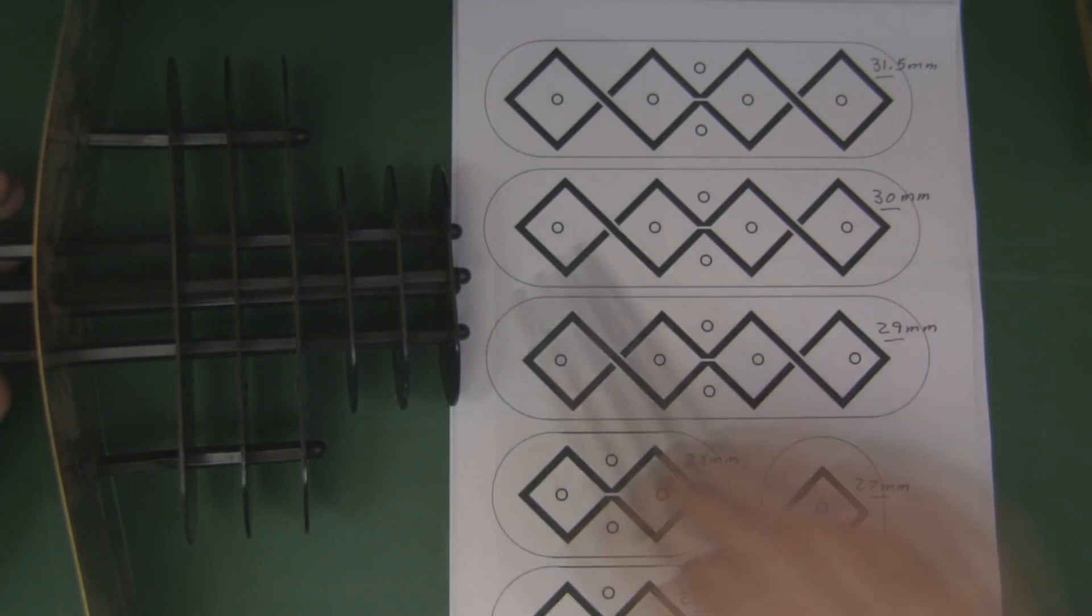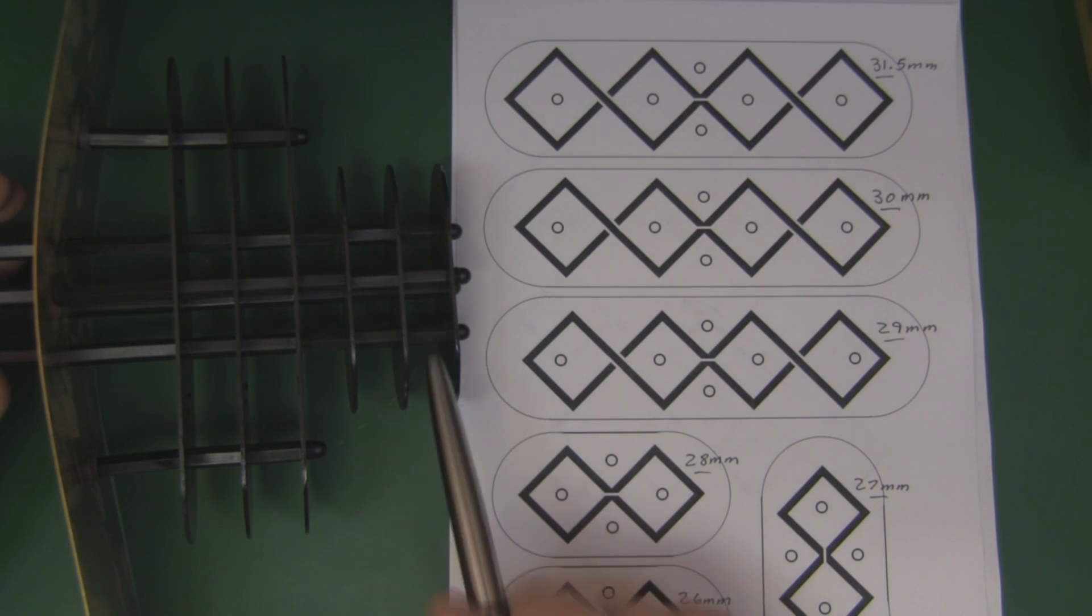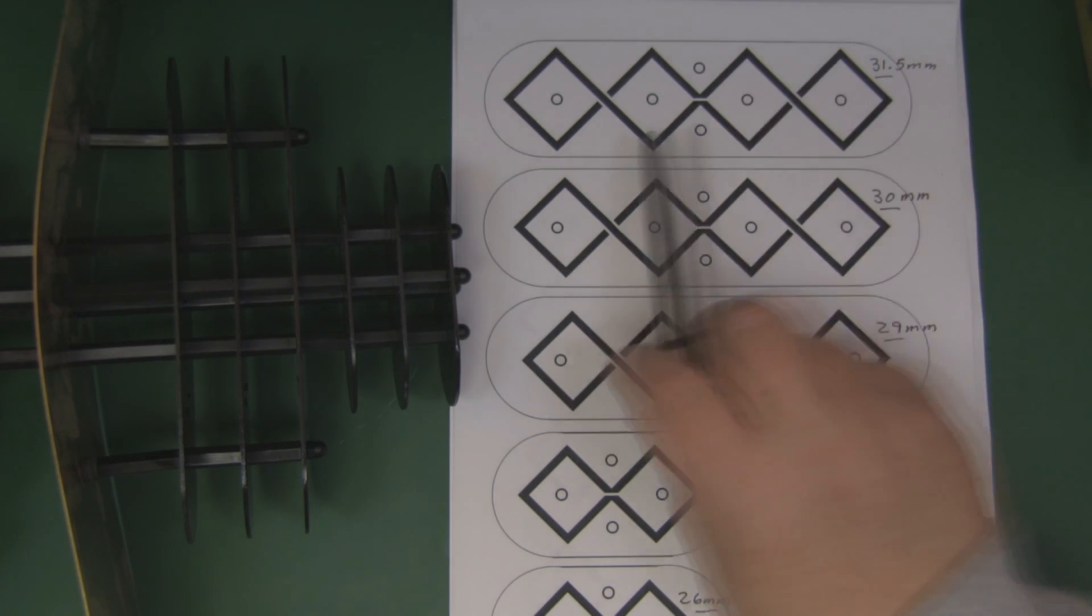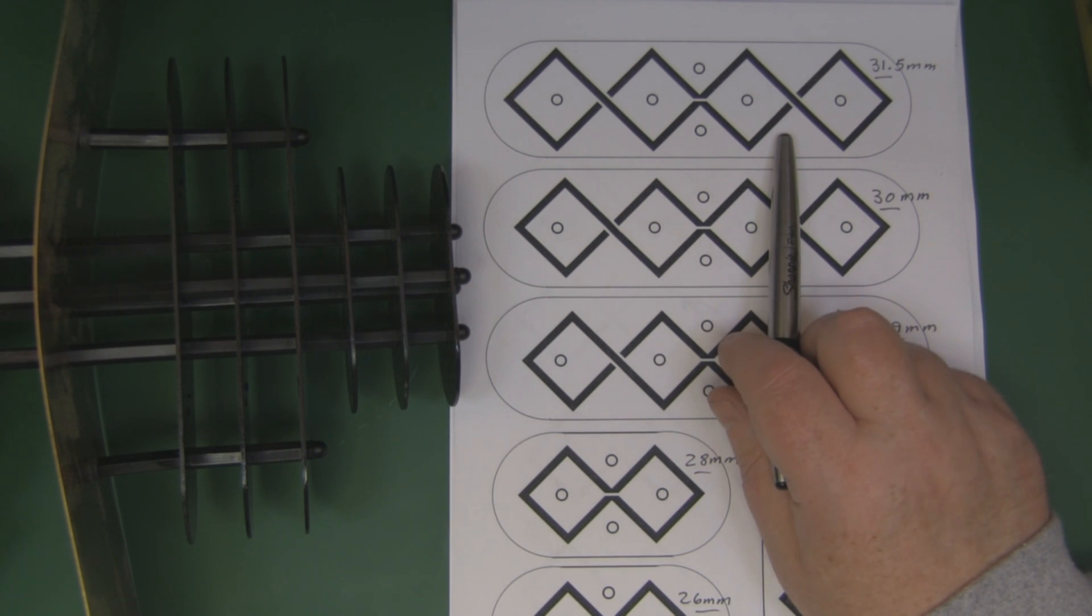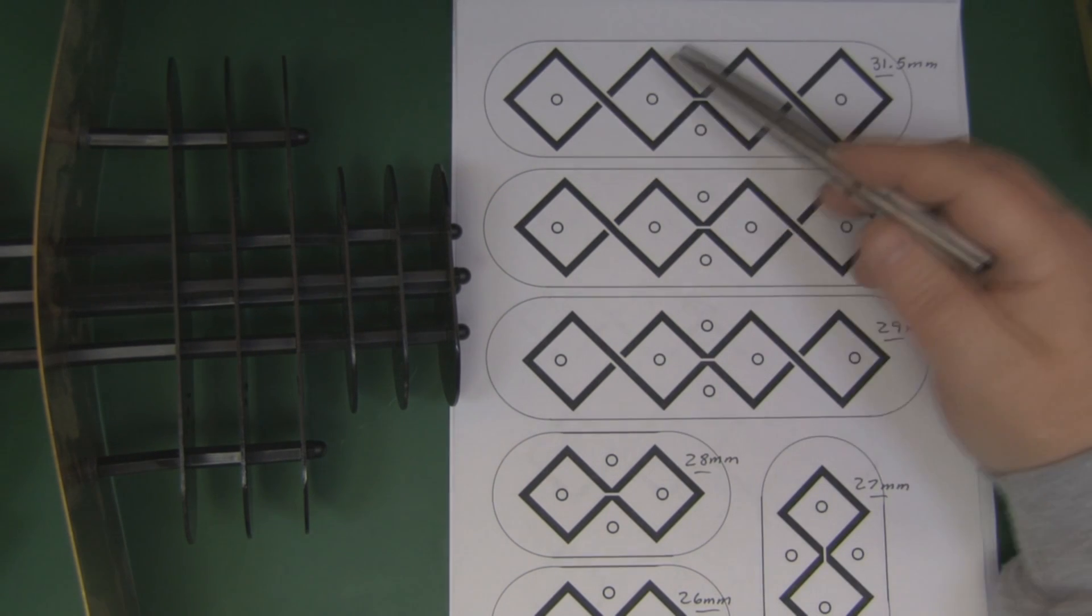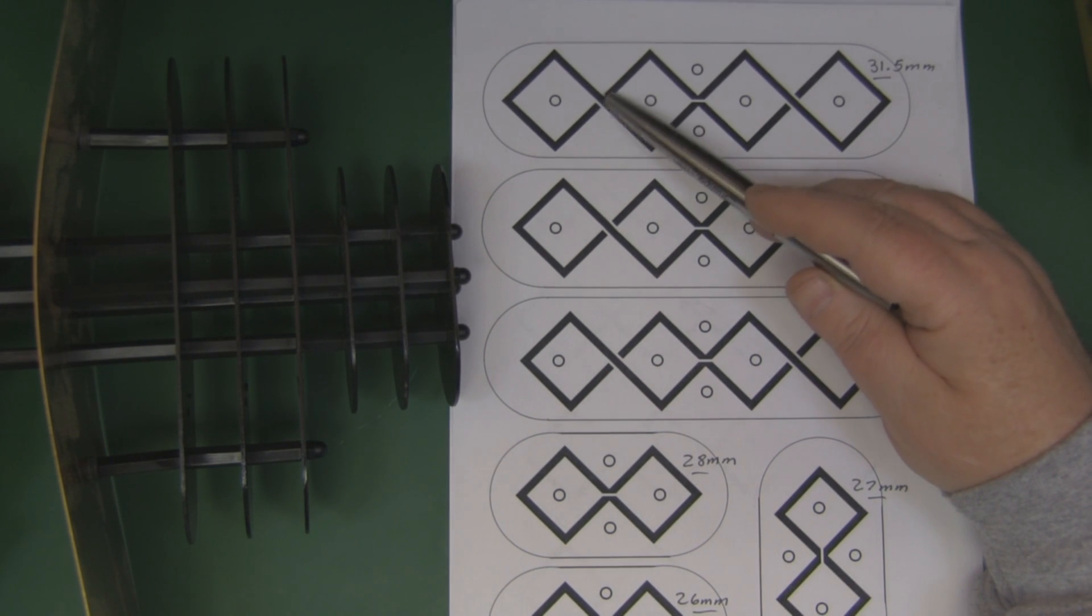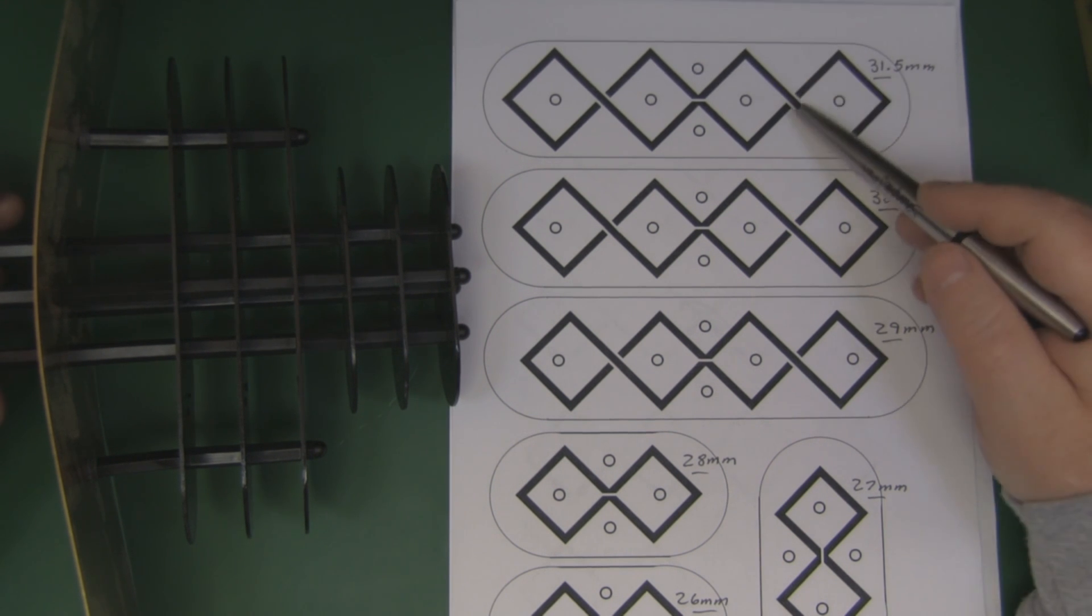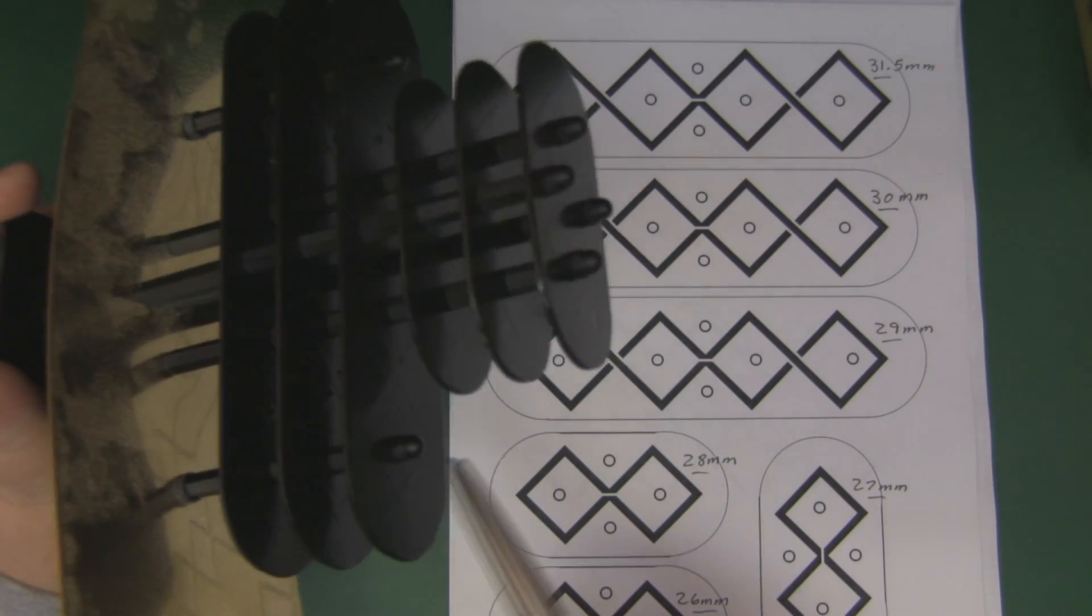Before we move on to the spacings between elements, there's something else to take into consideration when making a double biquad element on PCB. At this point here and this point here the elements - the tracks themselves - are going to cross over each other. There's a couple of ways you can do that on a PCB. You can drill a small hole here and a small hole here and then thread wire on the underside, take up any slack and solder it onto those two points. This is what I've done with this first prototype here.